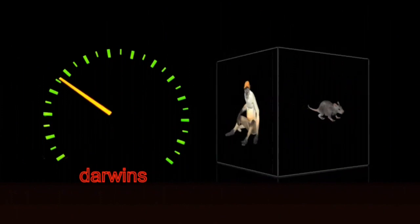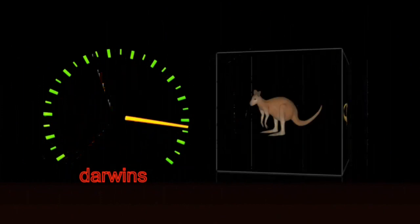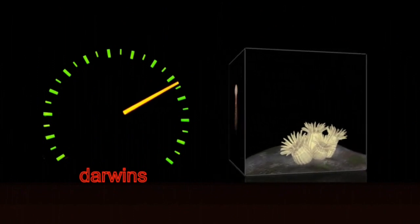The fastest rate found in colonization events was 80,000 Darwins, or 2,500 times the required rate.